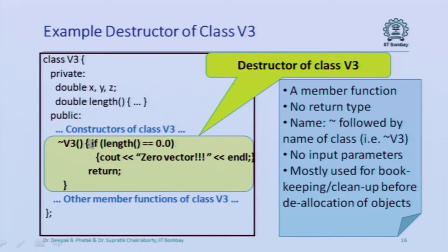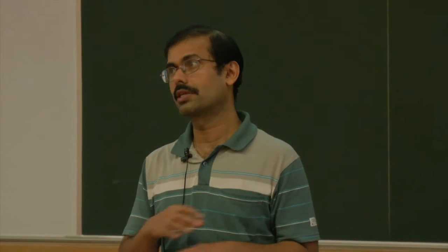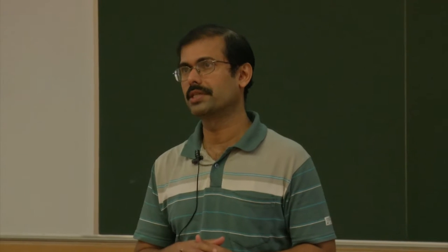The constructor function has the same name as the class; the destructor function is tilde followed by the name of the class. A destructor function does not take any parameters. Within it, you can do whatever you want — access other member functions, access data members. Remember the destructor is called just before the object is deallocated, so when the destructor is called, you still have access to everything in the object. After the destructor function returns, then the object is going to get deallocated. That is the last time you see that object — after that, it will be gone.